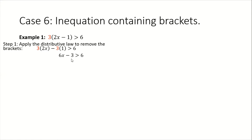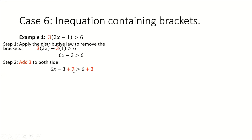Note that we are subtracting 3 from 6x, so that means we need to transfer this 3 to the other side. We can do that by doing the opposite operation, which is to add 3 to both sides. We would state this as 6x minus 3 plus 3 greater than 6 plus 3. When we simplify, we end up with 6x is greater than 9.